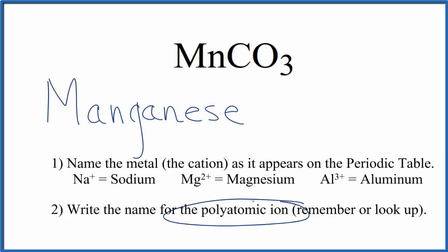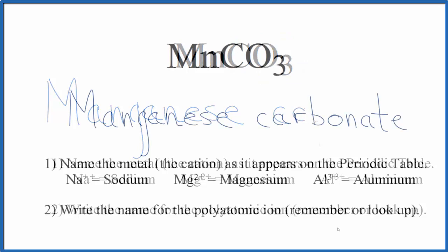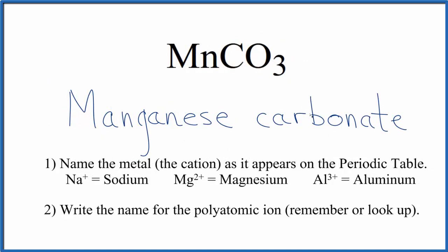Next, we write the name of the polyatomic ion. So you either remember that CO3 is the carbonate ion, or if you're allowed, you look it up on a table of polyatomic ions. So CO3, that's carbonate. So far, we have manganese carbonate as the name for MnCO3.